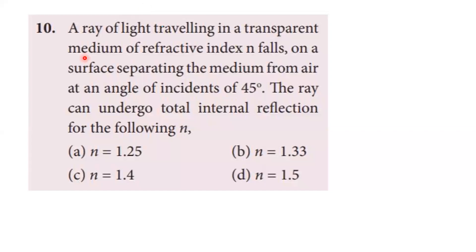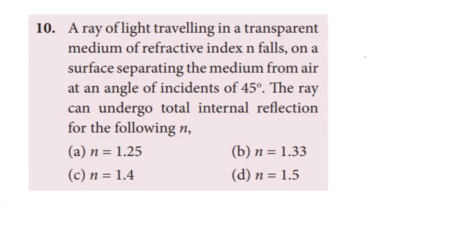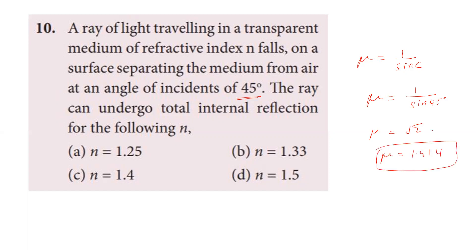A ray of light traveling in a transparent medium of refractive index n falls on the surface separating the medium from air at an angle of incidence of 45 degrees. For total internal reflection, the angle of incidence must be greater than the critical angle. The critical angle relation gives mu equals 1 by sin(45°) equals 1 by (1/√2) equals √2 equals 1.414. Fourth option is correct.